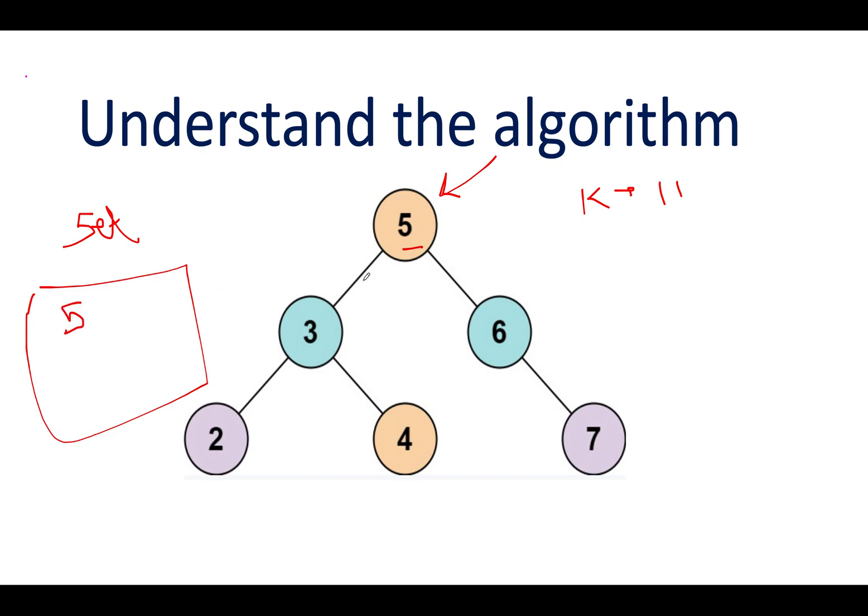We will continue the iteration on the remaining two branches of the current node. We will invoke the same function on the remaining two branches of the input root. What is the current root? The current root becomes 3. And what is the counter element? The counter element is 11 minus 3. 11 minus 3 is 8. Does 8 exist in the set? It doesn't exist in the set, so what you are going to do? You will add 3 to the set data structure.